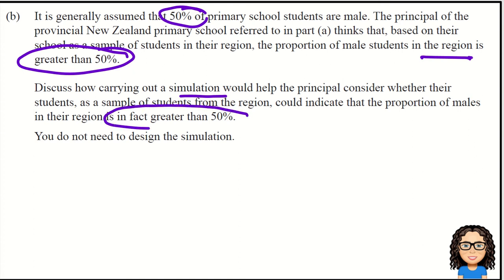So how likely is it that the proportion of males is greater than 50%, and that this isn't just random sampling error? They're not asking us to design the simulation — they want us to talk about simulating in general, why we would do it, and some ideas behind it.